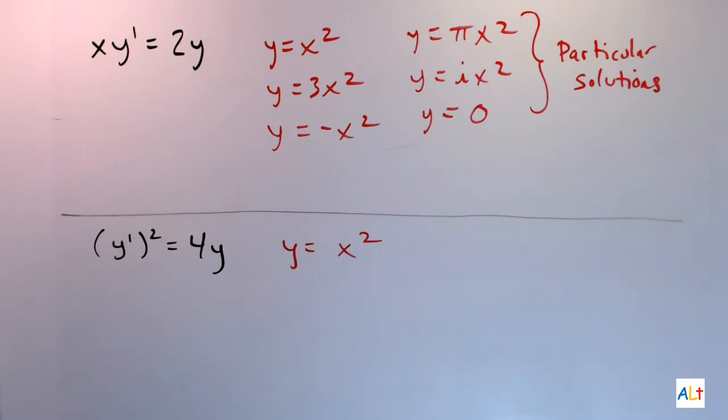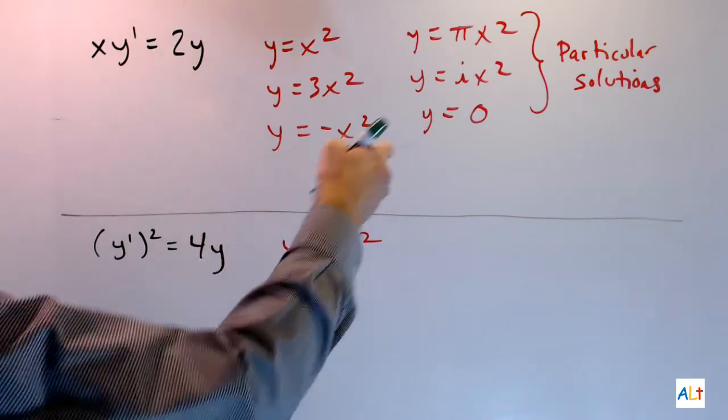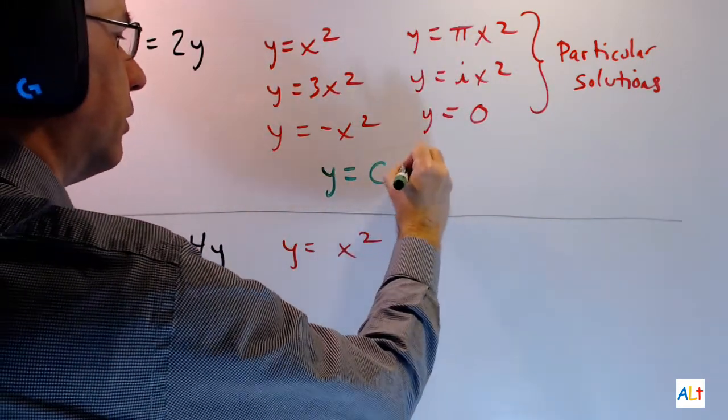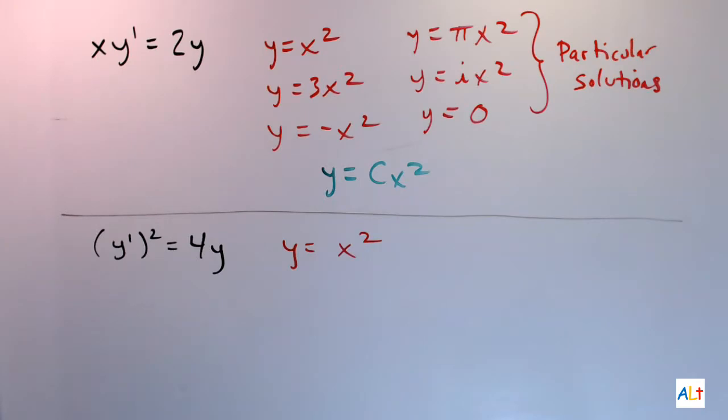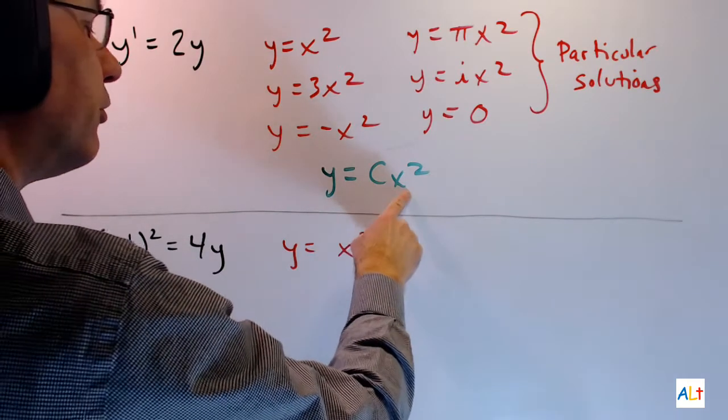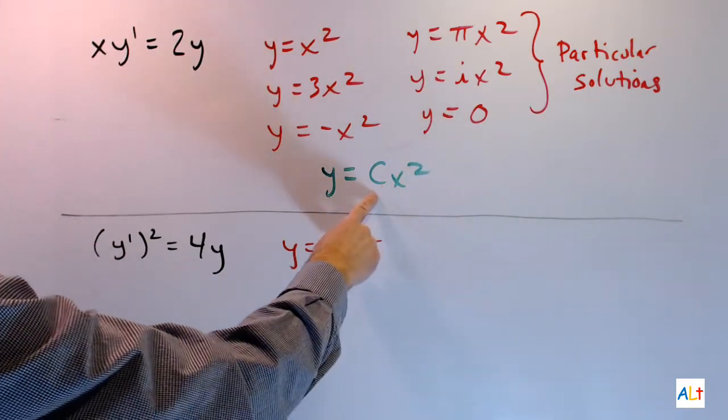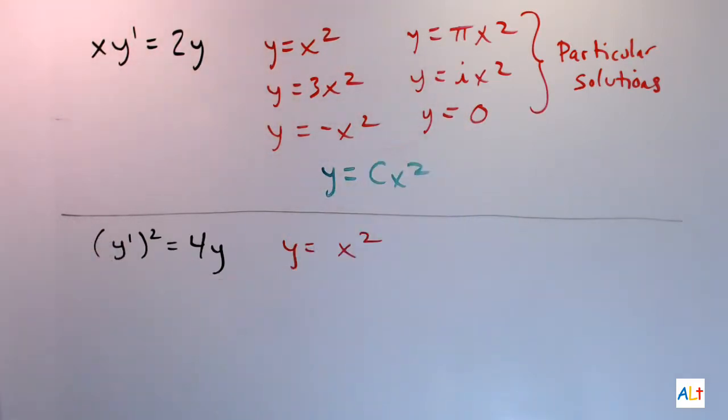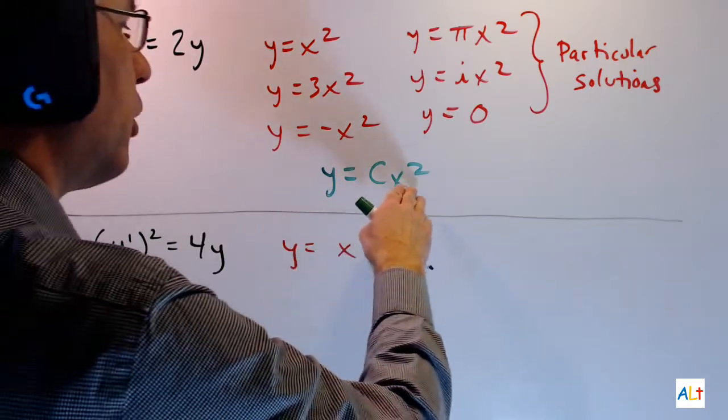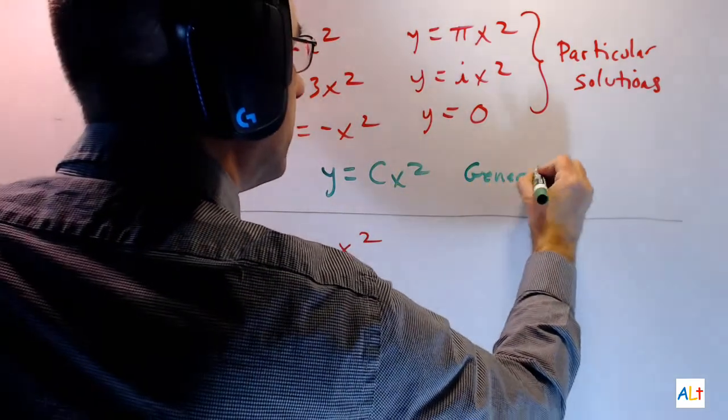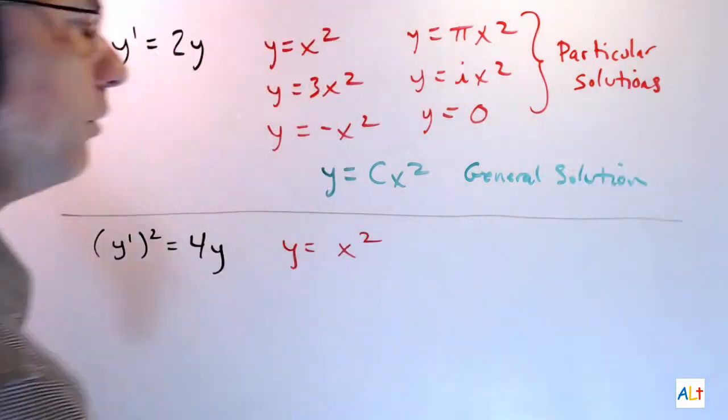To keep track of all these solutions, we summarize them in the following way. All of these can be represented by one simple formula that looks like this. Every single one of those is in the form of a constant coefficient times x squared. Even y equals 0. If you set c equal to 0, you've got y equals 0. Since this summarizes all of the possibilities, we call this the general solution.